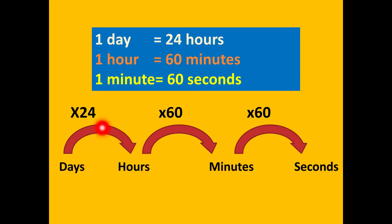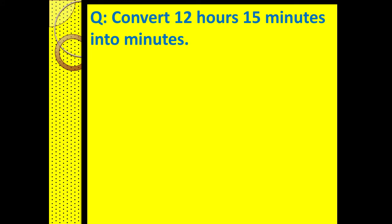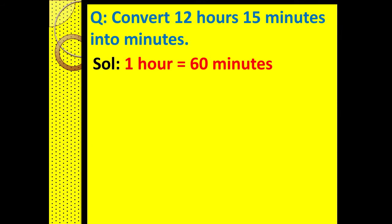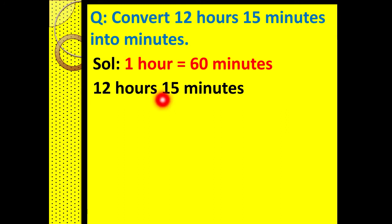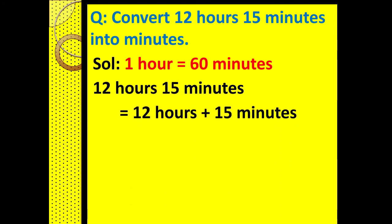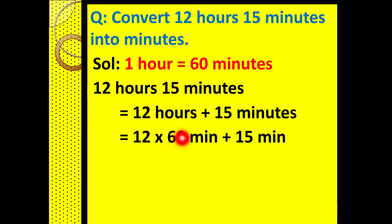Let us first learn how to convert given hours into minutes. We are given 12 hours 15 minutes and we want to convert this into minutes. First, we note that one hour has 60 minutes. In the second step, we split 12 hours 15 minutes as 12 hours plus 15 minutes. We can't add these directly because one is in hours and the other is in minutes, so we need to change the hours into minutes by multiplying by 60.